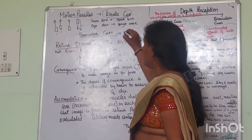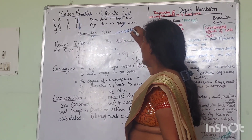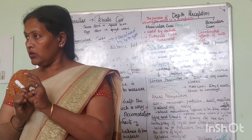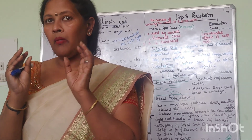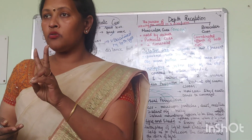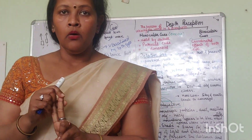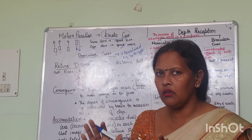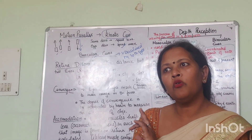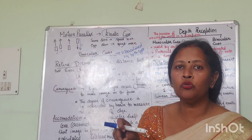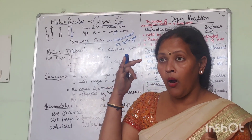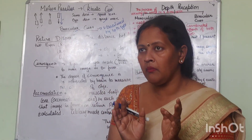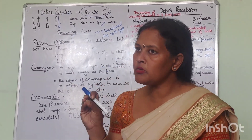Now we have binocular clues, perceived by both eyes. Our image is made in the retina. In the retina there are two spots: one is the blind spot and one is the fovea. The fovea point gives the clearest image. If your image is made at the fovea, it will be clear. The blind spot is where the optic nerve starts going to the brain — there are no rods and cones there, so we call it the blind spot.